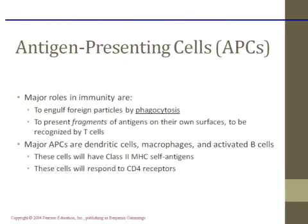APCs can be dendritic cells, which are macrophages found all around the body, or activated B cells. APCs have Class 2 MHC protein complexes on their cell surface — that's the key point. All APCs carry Class 2 MHCs.